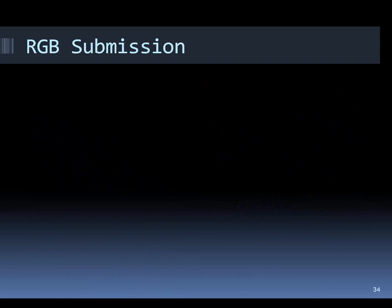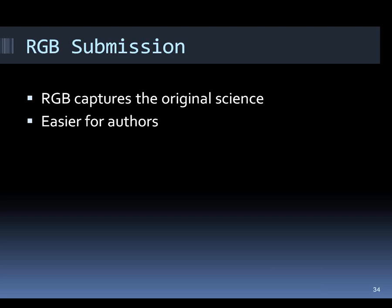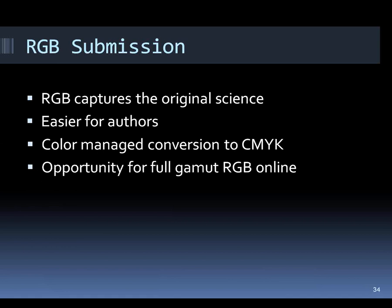Here are reasons why it's good to submit in RGB. First, all captures are made in RGB: digital cameras capture in RGB, scanners capture in RGB, and microscopes capture in RGB. Monitors also display in RGB. CMYK is only used for printing. So RGB preserves the original science without any mode change, making it easier for authors — they don't have to convert before submitting. We do a color-managed conversion to CMYK for print only, which allows full-gamut RGB online for the issue of record. What's captured is what goes online, since the internet displays on monitors using RGB.